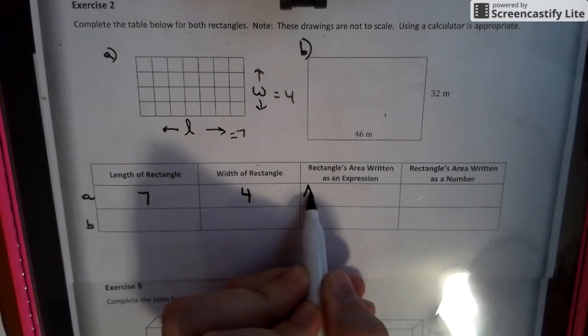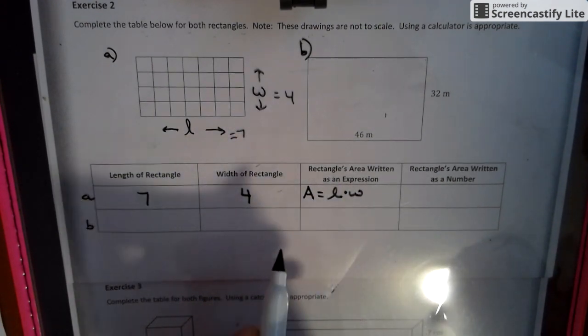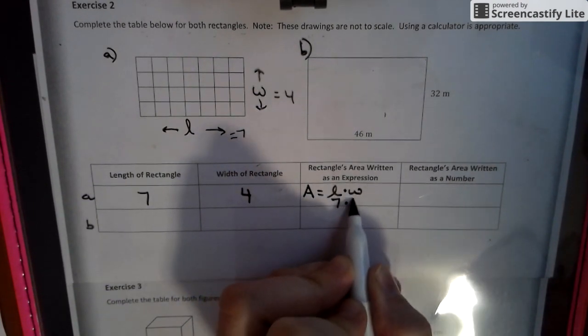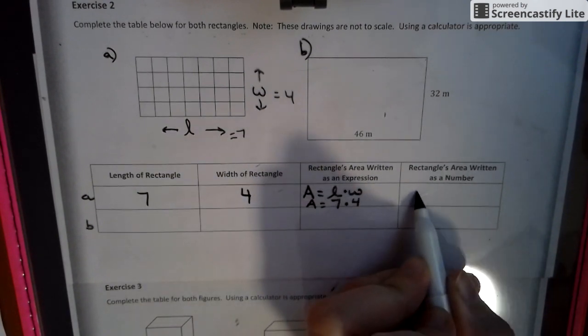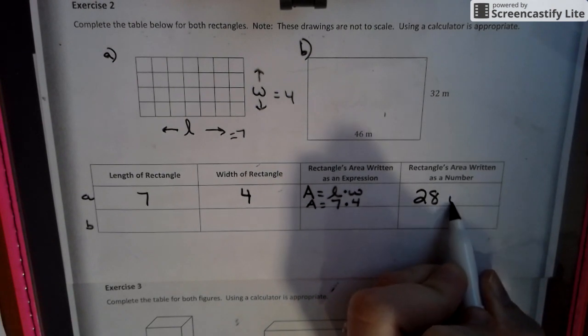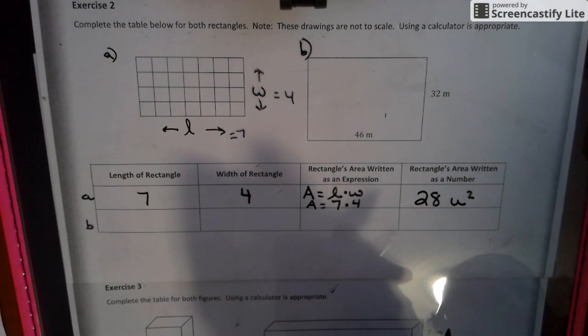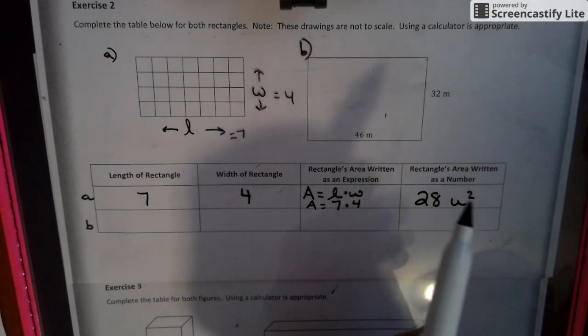The formula is area equals length times width. Putting that in place, we would have seven times four. Our final outcome is 28. Since it doesn't have a label, we can just put units. We have to put it to the second power because these are squared units. An easy way to remember this is since it's a rectangle, it is two-dimensional, so we use the little two.